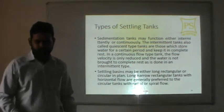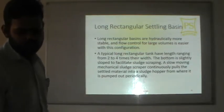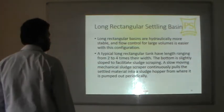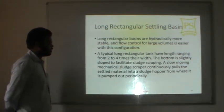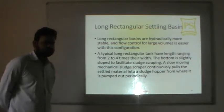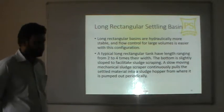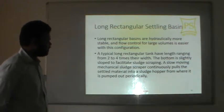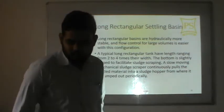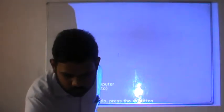In rectangular tanks, flow is horizontal, whereas in radial circular tanks the flow is radial or spiral. Long rectangular basins are hydraulically more stable and flow control for large volumes is easier. A typical long rectangular tank can have a length ranging from two to four times its width. The bottom is slightly sloped to facilitate sludge scraping, and a slow-moving mechanical sludge scraper continuously pulls settled material into a sludge hopper.